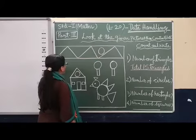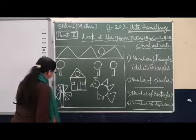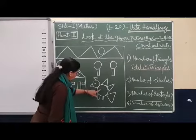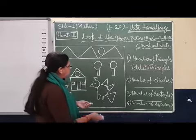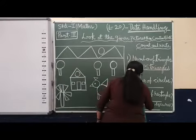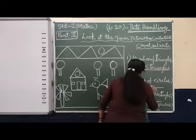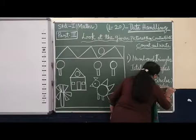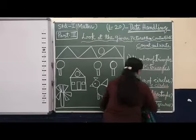Yes, one, two, three, four, five, then six, seven, eight. Total eight circles are there. So total eight circles. Yes, total eight circles. Clear?